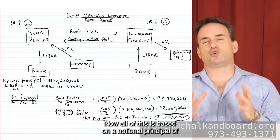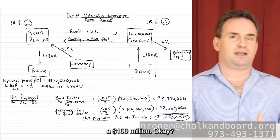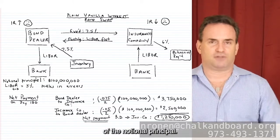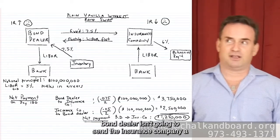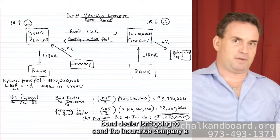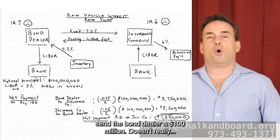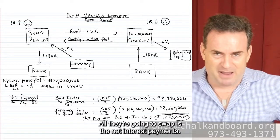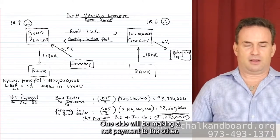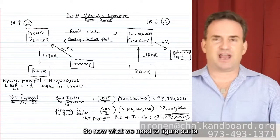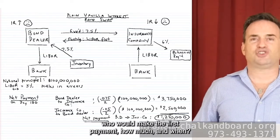There's no exchange of notional principal — that's why they call it a notional principal. The bond dealer isn't going to send the insurance company $100 million and vice versa. All they're going to swap are the net interest payments. One side will be making a net payment to the other. So now we need to figure out who would make the first payment, how much, and when.